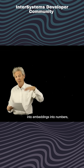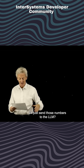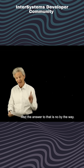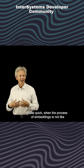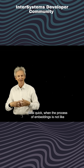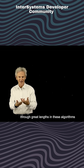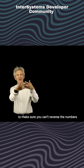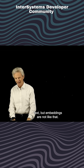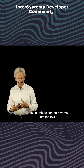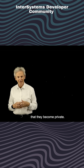If we have turned the information into embeddings, into numbers, is it private if I just send those numbers to the LLM? And the answer to that is no. The process of embeddings is not like encryption. Encryption goes through great lengths in these algorithms to make sure you can't reverse the numbers back into the original text. But embeddings are not like that — those numbers can be reversed into the text. So don't think just because you turn things into numbers that they become private.